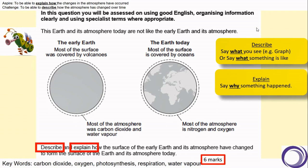As you can see, 'describe' and 'explain' are the command words in this question. 'Describe' means say what you see — for example on a graph, or in this case it could be in the information provided in the question. 'Explain' is to say why something has happened — so why has that change taken place. So now let's have a read through the question and the text and underline some key points. We're being asked to describe and explain how the surface of the early Earth and its atmosphere have changed to form the surface of the Earth and its atmosphere today.